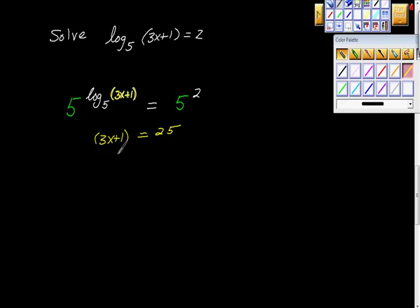Now, we can just do some work here. We can simplify this. So we have 3x plus 1 is equal to 25. Add negative 1 or subtract 1 from each side. I'm going to subtract that. It says 3x is equal to 24. Divide both sides by 3. We get x is equal to 8.